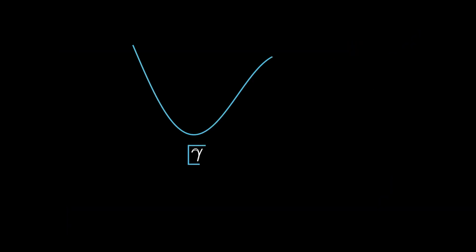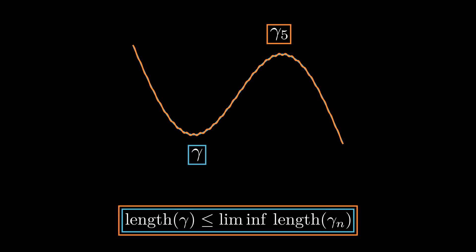The fifth property that we will discuss is probably the only one that is not obvious. Imagine that we have a curve γ and a sequence of curves with the same domain that converges pointwise to γ. Then the length of γ is at most the lim inf of the length of the curves of the sequence. In order to prove this, one needs to consider an arbitrary partition of γ and show that the lim inf on the right is not smaller than the length of the corresponding broken line.